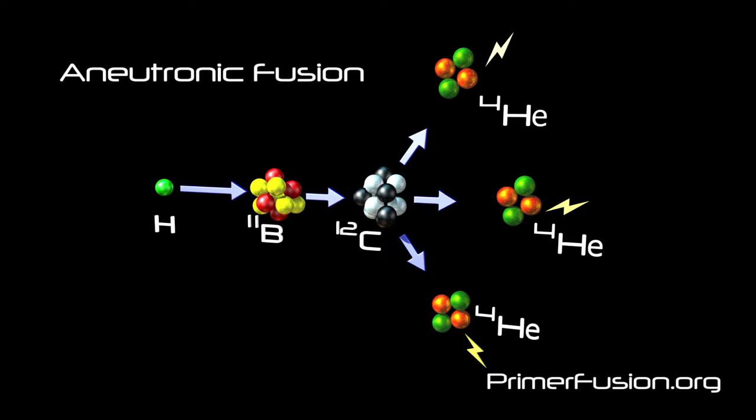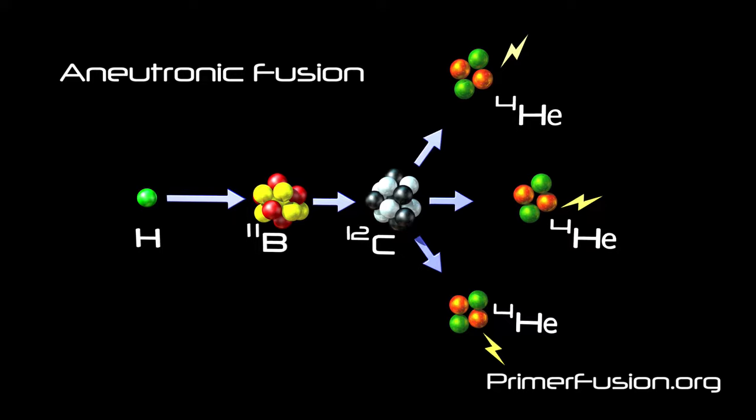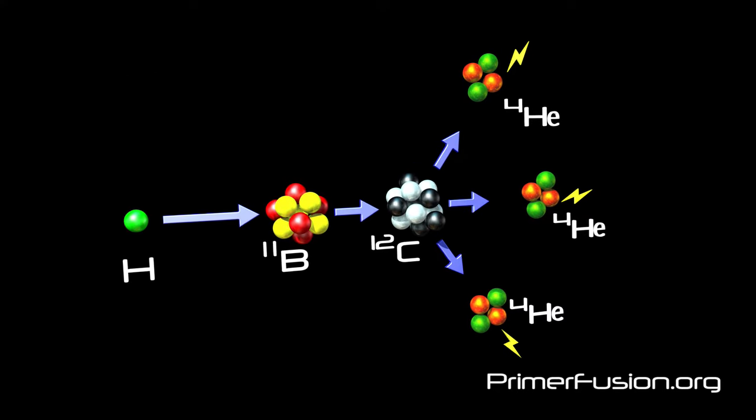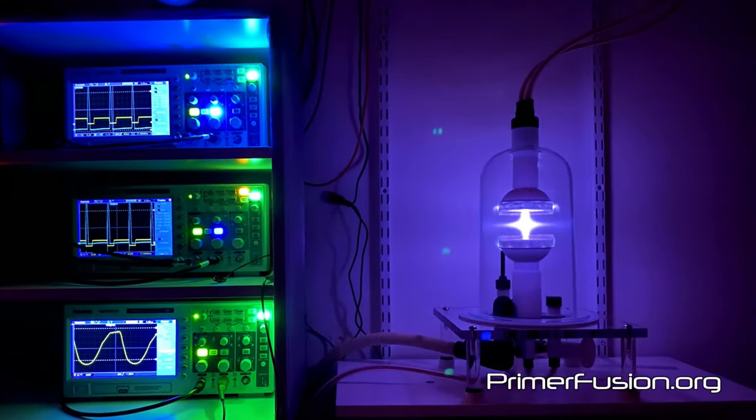These highly charged helium-4 alpha particles then collide with the collector to extract the charges which are then run through a transformer to directly convert them to usable electricity without going through a heat conversion process such as those used in the typical steam-based power plant.